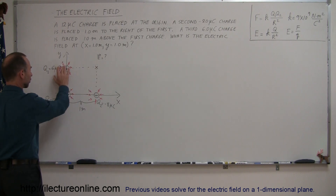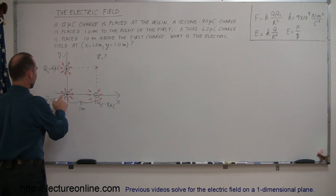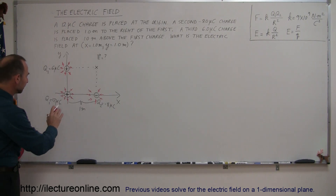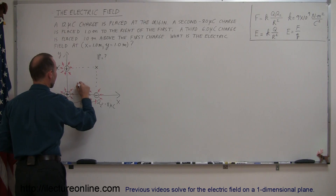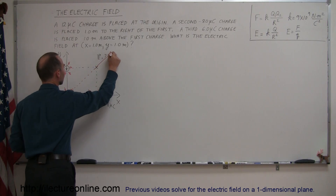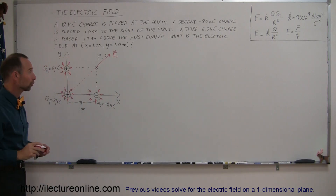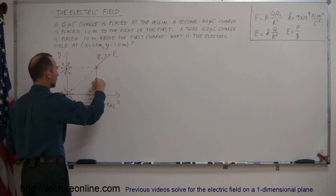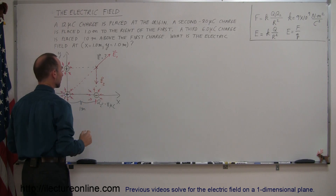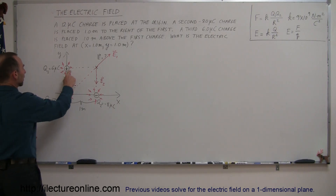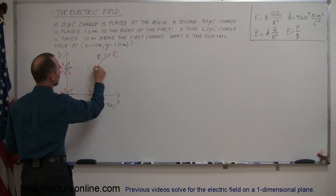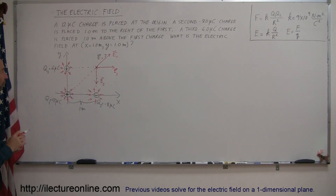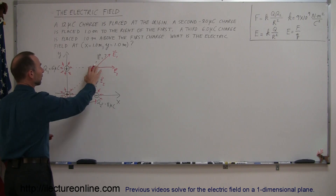Looking at this location, we go one charge at a time. For the first charge, being positive, the electric field at our point emanates diagonally outward — so E1 points diagonally in that direction. For charge 2, which is negative, the field points towards the charge, so E2 points downward. And due to charge 3, the field emanates away from it, so E3 points in this direction. We've now identified the three electric fields caused by the three charges at this particular location.